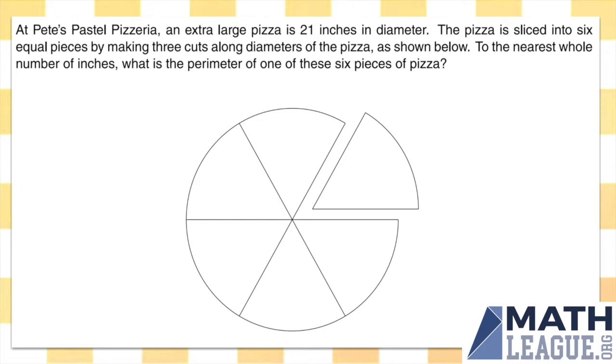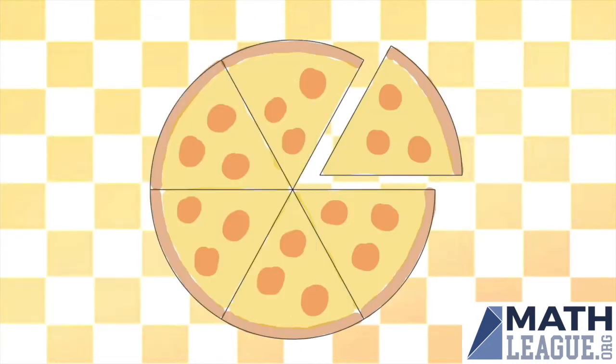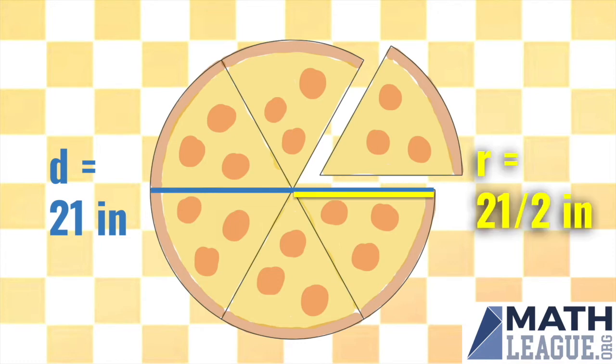To start, let's look at this line and this line. We know that the diameter is 21 inches, so this distance right here is 21 inches. Half of that, or the radius, is going to be 21 over 2 inches.